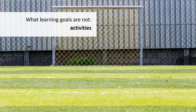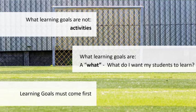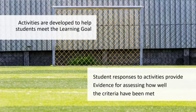Learning goals are also not learning activities, which describe what students will do during the lesson to achieve the goal. A learning goal is a what — what do I want my students to learn? An activity is a how — how will they learn it? In lesson planning, learning goals must come first, to make sure that instruction will help propel students forward towards meeting year-end goals. Instructional activities are developed to enable students to meet the specified learning goals and demonstrate the success criteria. Student responses to key instructional activities provide evidence for assessing and responding to how well the criteria have been met.